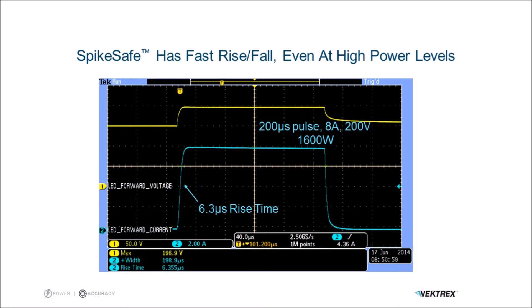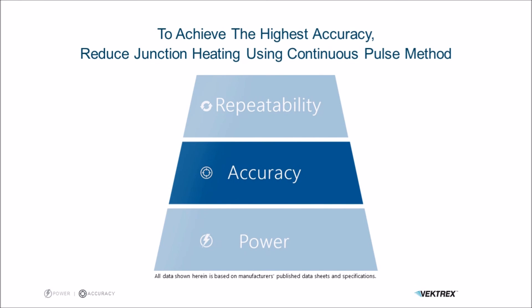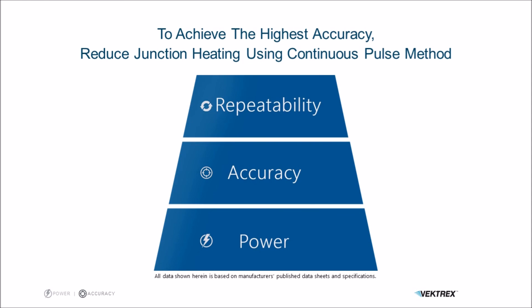As we saw in this webinar, the key to accuracy is to reduce your junction heating, and the continuous pulse method is the best method for reducing junction heating. But if you're using the continuous pulse method, you need a good current source. Go to Vectrex.com for more information about the SpikeSafe performance current sources, and watch the next webinar where I'll talk about another way to improve light measurements through increased repeatability.